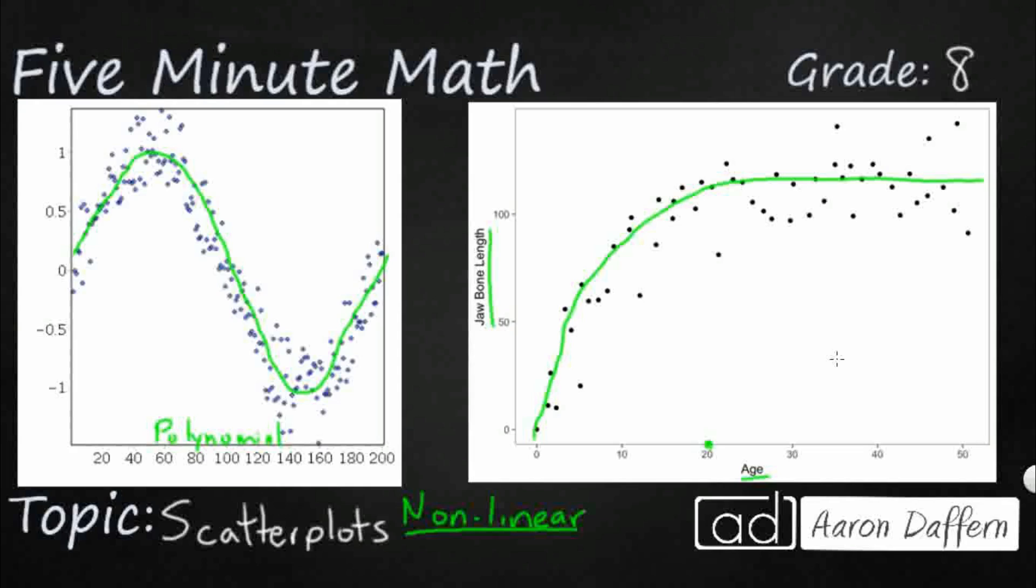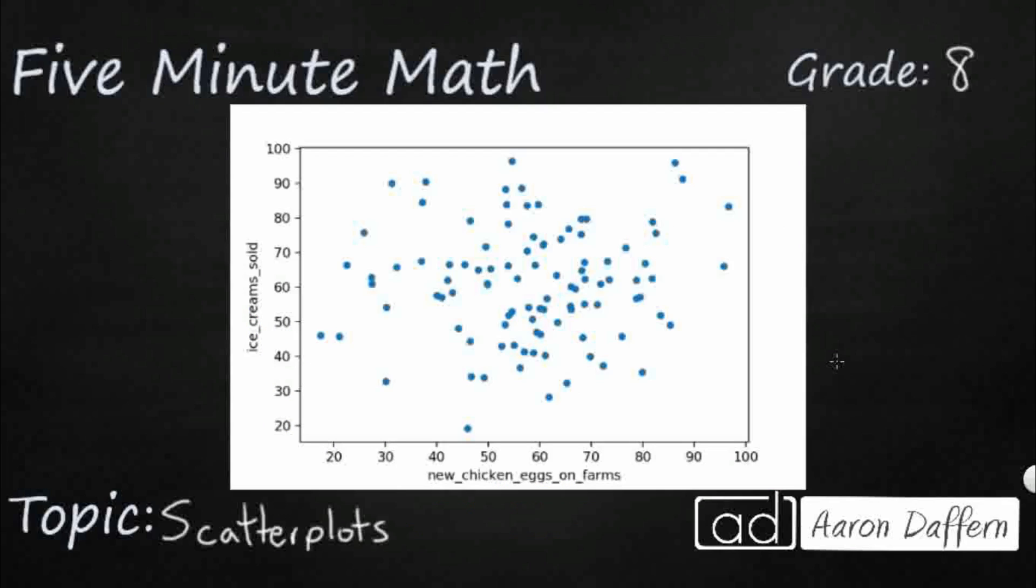The last one is going to be pretty obvious. It's no association. So the no association scatter plots are usually pretty easy to see simply because there's no line. Even those last two had a line, though they were curves, so they were nonlinear, but they had some type of association or trend line that you could see. This is just no association. It looks like someone just dumped some dots on the top of a graph. And take a look at the x and y. So the x shows how many new chicken eggs are on a farm and trying to relate that with the amount of ice cream sold. Yet those two don't have anything to do with each other. Chicken eggs and ice cream don't go together. That's why your dots are all over the place. So this is a scatter plot that has no association or no relationship between the x and the y axes.